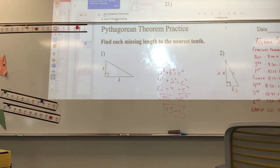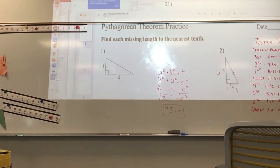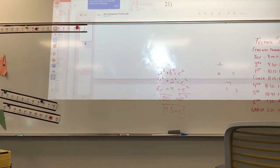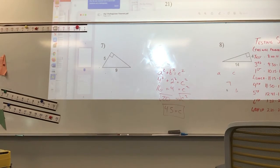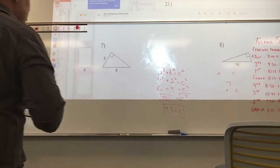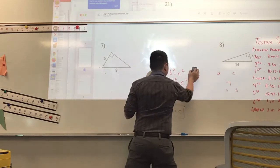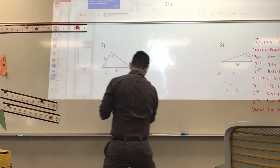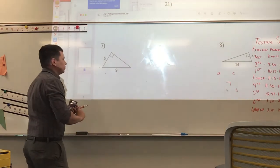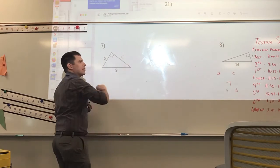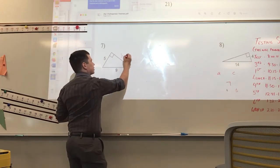That's the last one of those I'm going to do with you. When you're solving for the hypotenuse, it's pretty easy. The tricky part is on number seven — it gives you a leg and the hypotenuse, and you need to solve for the other leg. This is where it's essential that you label your triangle correctly, because you're going to want to make the missing side C, and that's not correct.